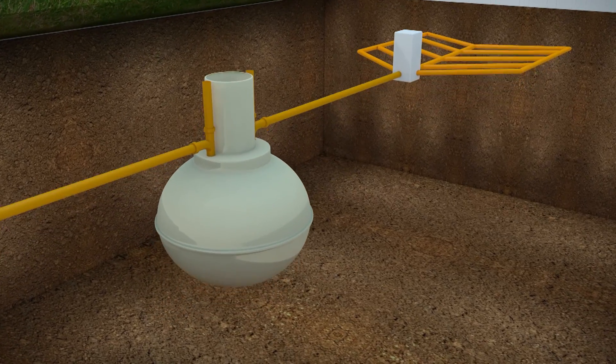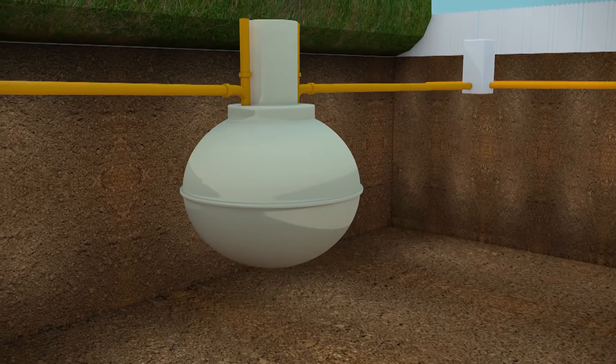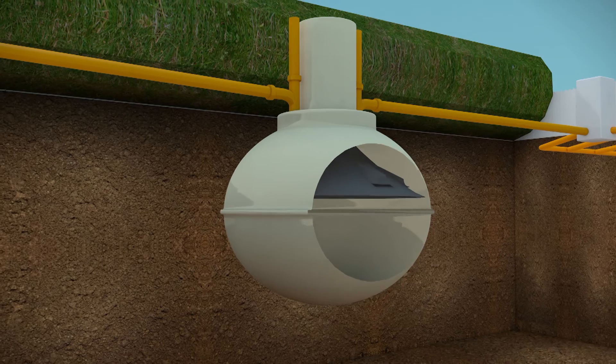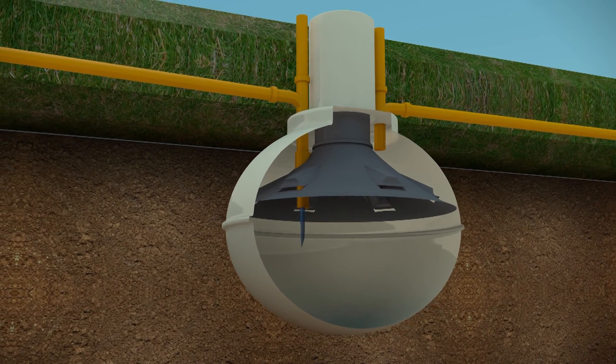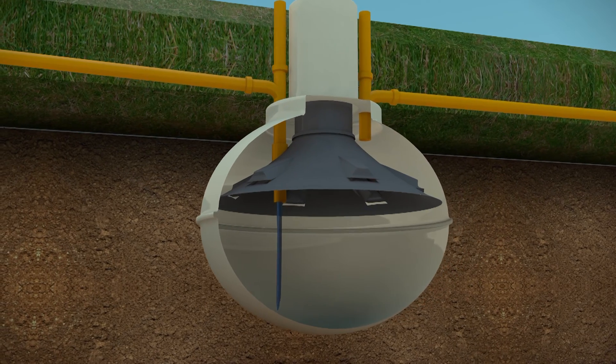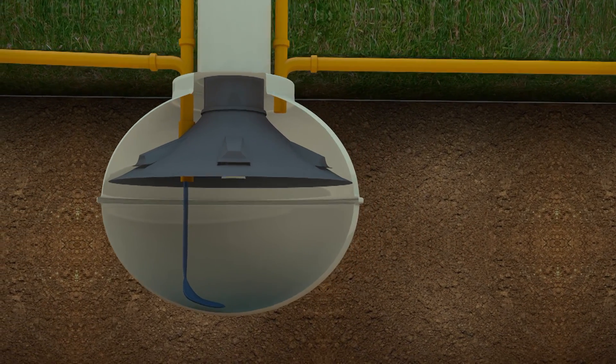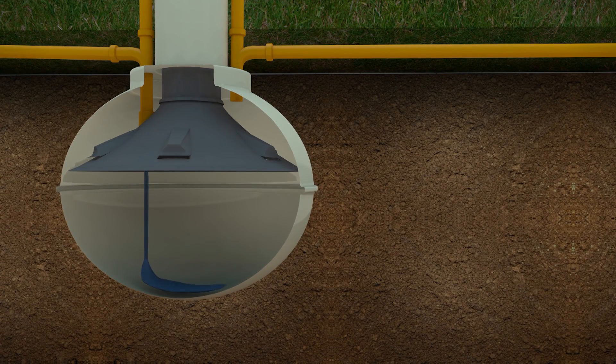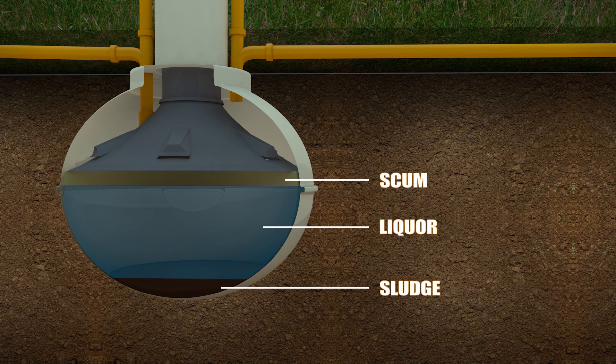When the foul waste water settles in the septic tank, the solids in the water break down and separate into three distinct layers. As the septic tank collects the waste from the property, less dense waste material floats to the surface to form a scum layer. The more dense waste material sinks to the bottom of the tank, forming sludge.